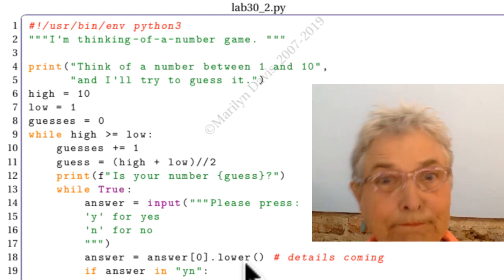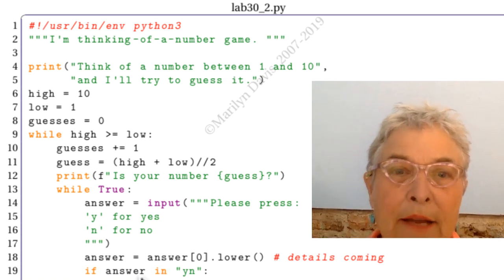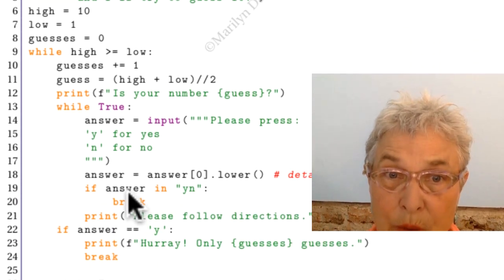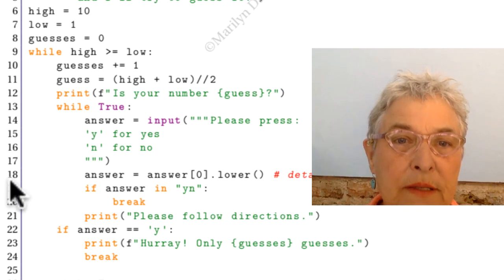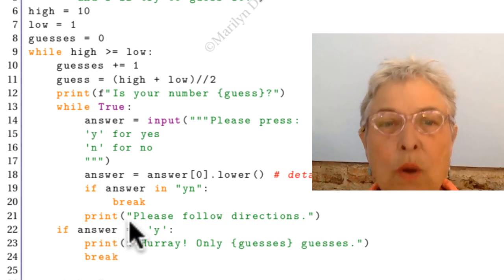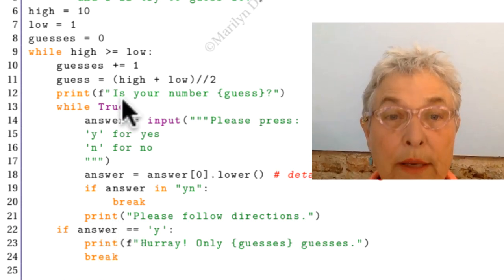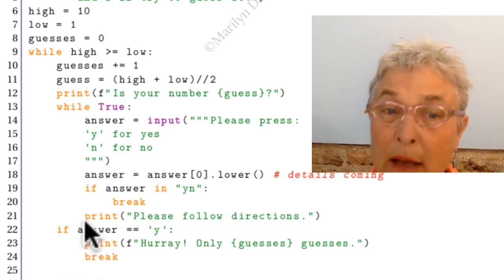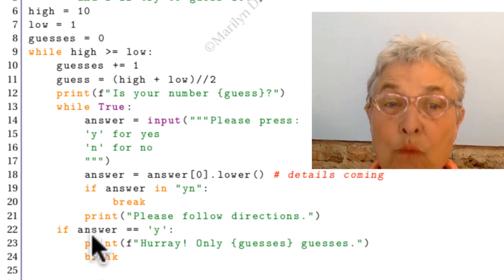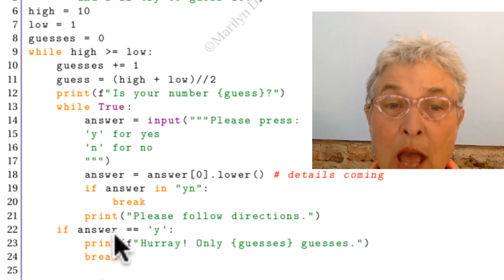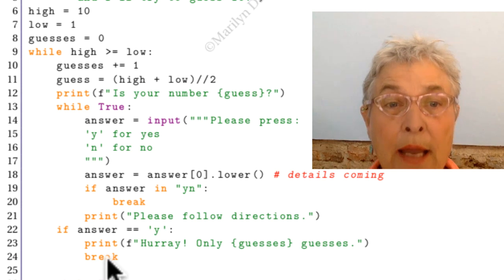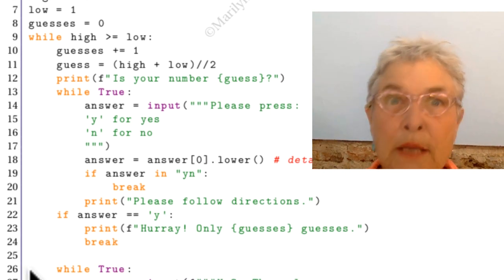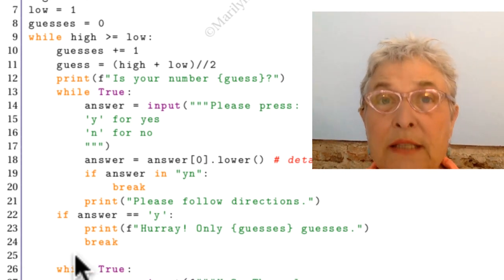And if that letter, that one character, is in 'yn', then I break out of this loop. Otherwise, I scold my friend and go around again. But if I break out of the loop, then I know I either have Y or N for my answer. If it's Y, then I have guessed the answer. I give a report and break out of the outer loop. I'm done.